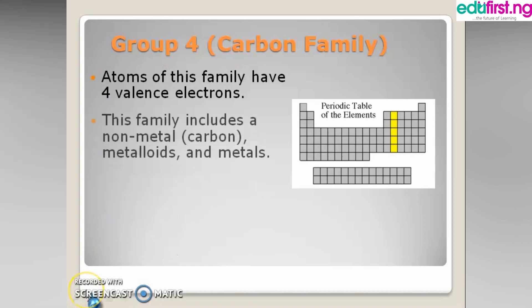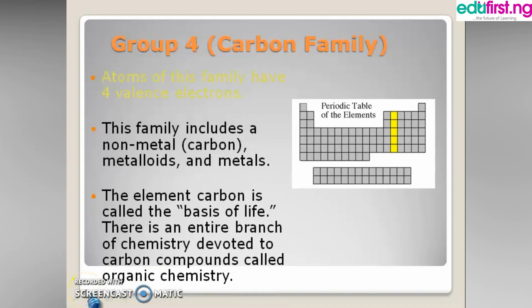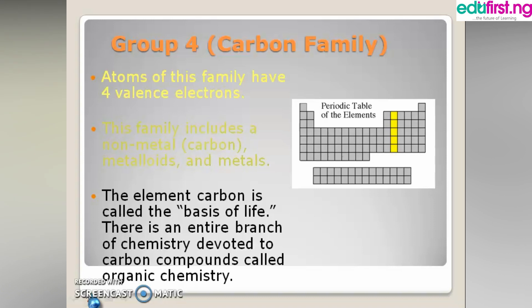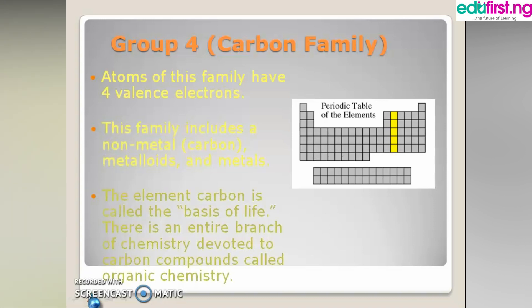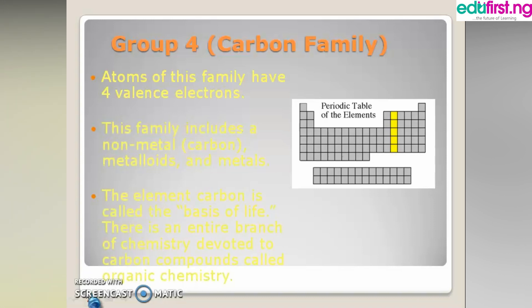Then we have the group 4 elements, which is the carbon family. Carbon family elements have four electrons on the outer shell, meaning they have four valence electrons. The family includes carbon. Carbon is referred to as the basis of life, since there is a branch of chemistry named after it, called organic chemistry.